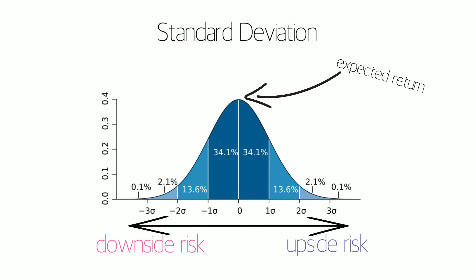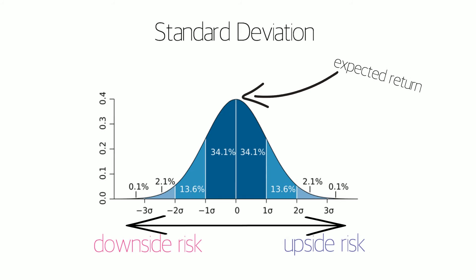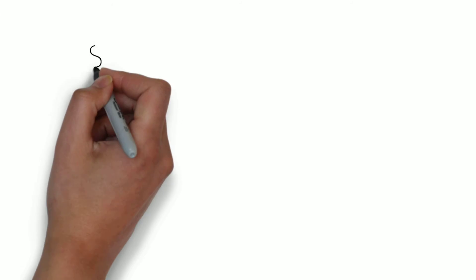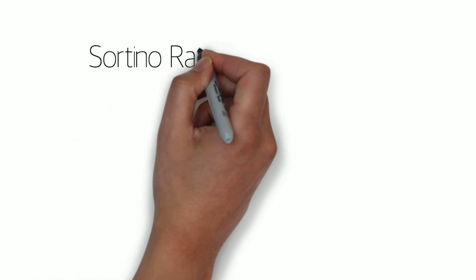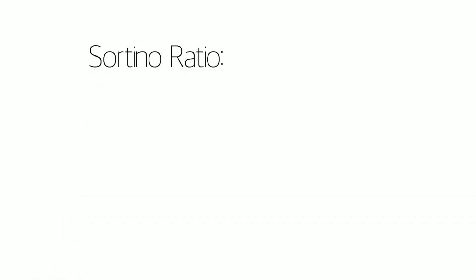If your target rate of return is 5%, you wouldn't be too concerned if the portfolio was yielding, say, 6% one year or 7% the next. In this situation, you may want to use the Sortino ratio to compare portfolios.